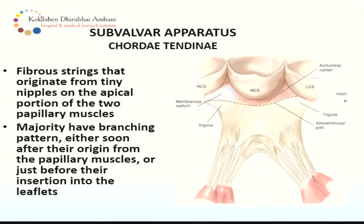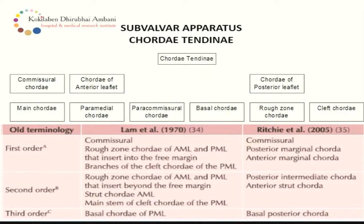The chordae tendineae are fiber strings that originate from the tiny nipples of the apical portion of the two papillary muscles. The majority have a branching pattern either soon after their origin from the papillary muscles or just before insertion to the leaflets. Chordae have been named and renamed. The chordae tendineae can be: commissural chordae, chordae of the anterior leaflet, and chordae of the posterior leaflet as the major divisions. Individually, they are the main chorda, the paramedial chorda, paracommissural chorda, the basal chorda, the rough zone chorda, and the cleft chorda.